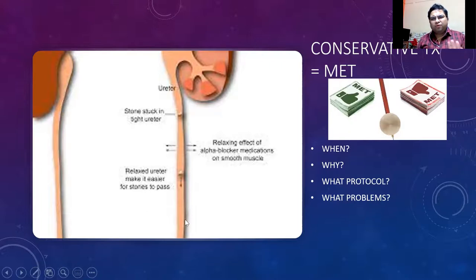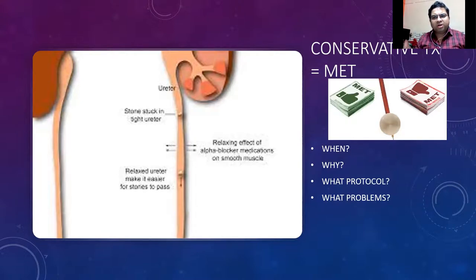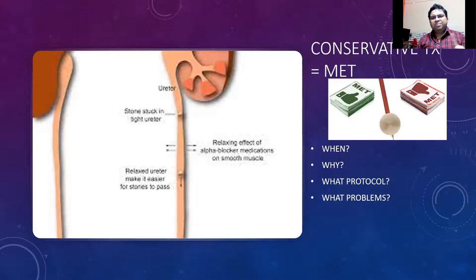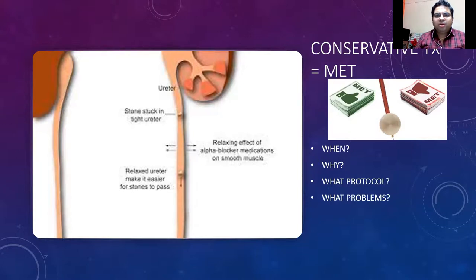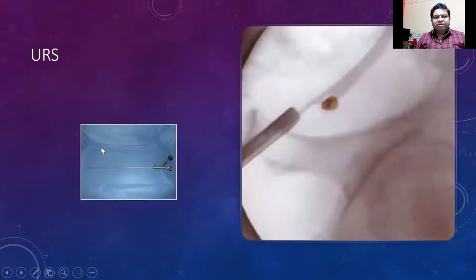This will relax the ureteric impaction and allow the stone to pass easily — for lower ureteric stones of four to five millimeters with no hydronephrosis and no clinical symptoms. The protocol limits MET to five to seven days; you won't prolong it indefinitely even without pain. The patient must come back with a redo ultrasound and repeat imaging. During this time, he has to urinate on a strainer to see if the stone has passed. Most patients are lost to follow-up because they have no pain, then return later with severe impaction and infection.